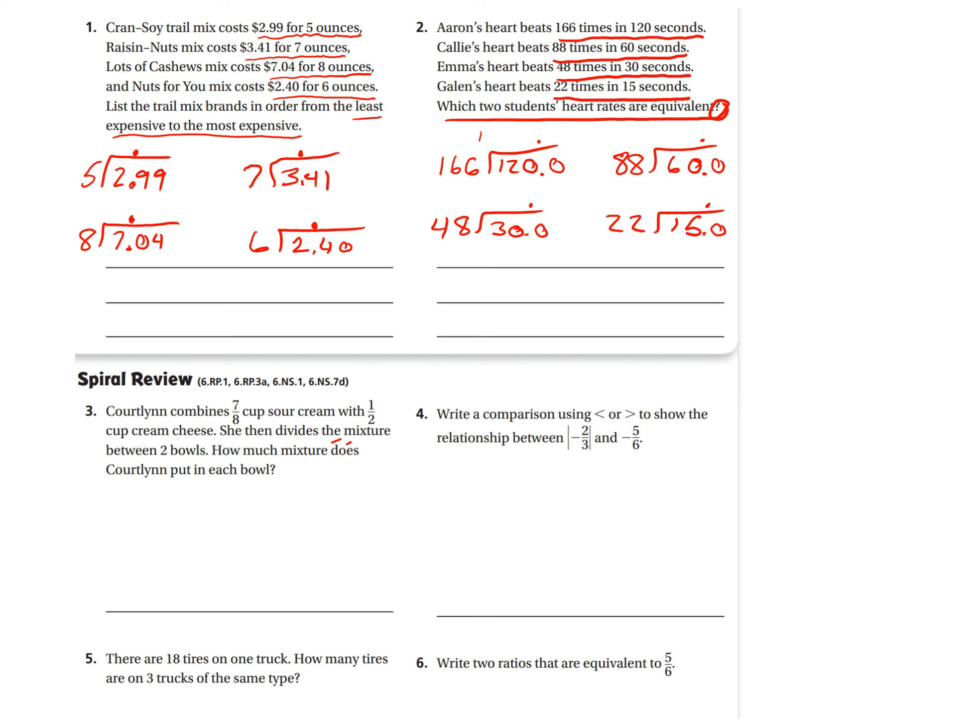And then you just do your division. But, again, if you have trouble with the division, don't hesitate to raise your hand. We'll go through the steps of long division again. Okay. Number three. Cortland combines 7/8 cup of sour cream with 1/2 cup cream cheese. She then divides the mixture between two bowls. How much mixture does Cortland put in each bowl?